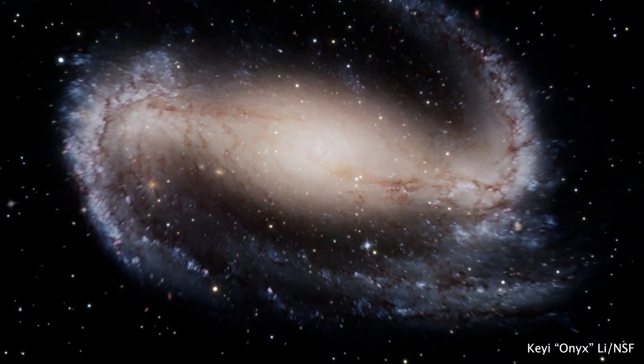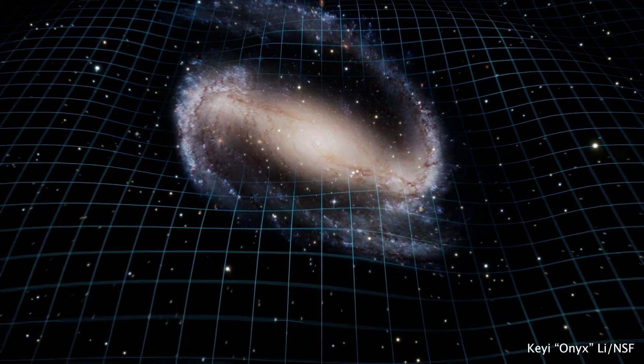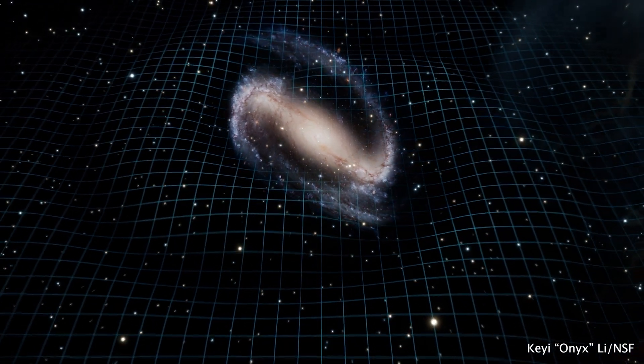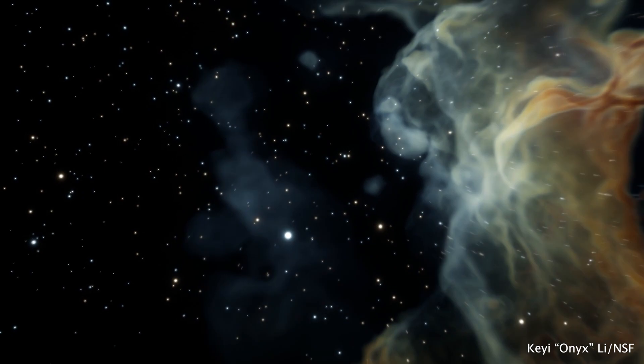Gravitational waves are deformations in the fabric of space-time emanating from the movement of some of the most massive objects in the universe. But gravitational waves are not a type of light, and therefore they're invisible to the human eye, which makes it really hard to imagine how they work.